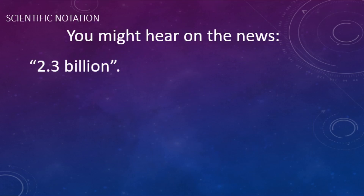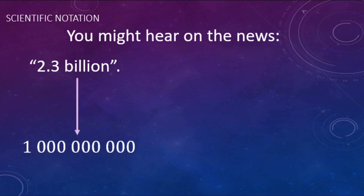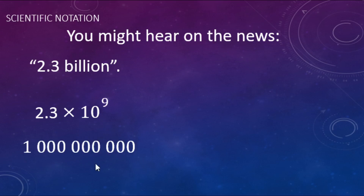You might hear on the news something like 2.3 billion. Billion is a one followed by nine zeros. The way we write this in scientific notation is 2.3, and then times 10 to the — this is where your powers of 10 comes into play — billion is 10 to the ninth power. So that's going to be 2.3 times 10 to the ninth. If we wanted to write this out regularly, that would be 2,300,000,000.